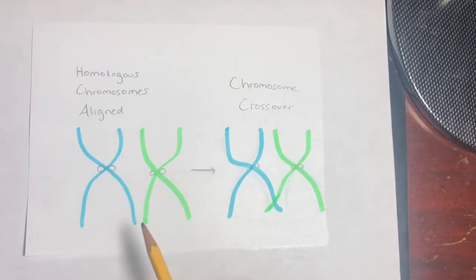So here are two homologous chromosomes aligned, and here we have two segments crossing over.